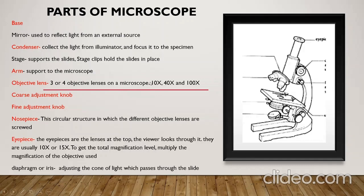Mirror is used to reflect the light from the external source. Condenser is used to reflect the light from the illuminator and it focuses it into the specimen. Stage supports the slide. Stage clips hold the slide in place.